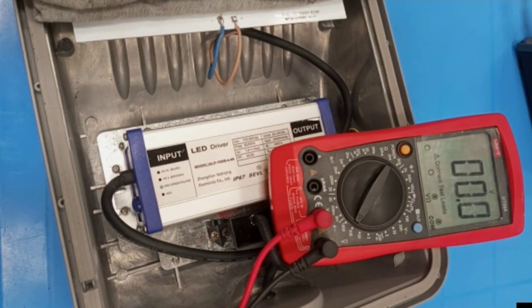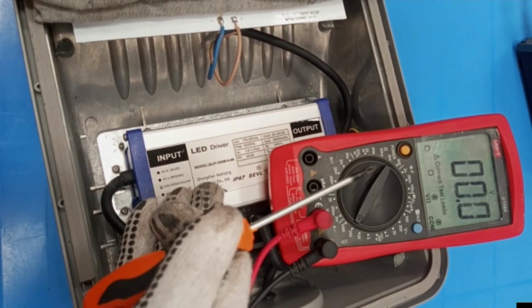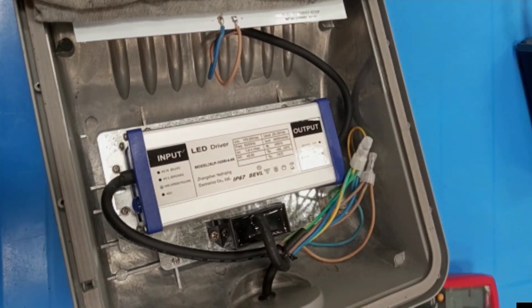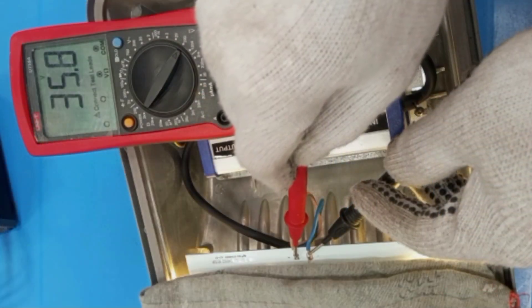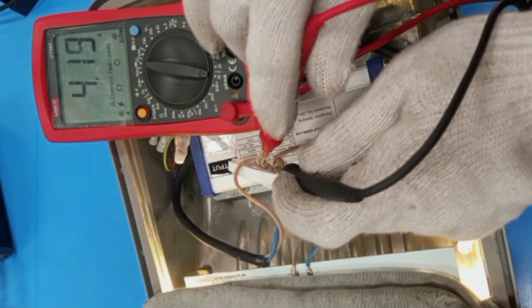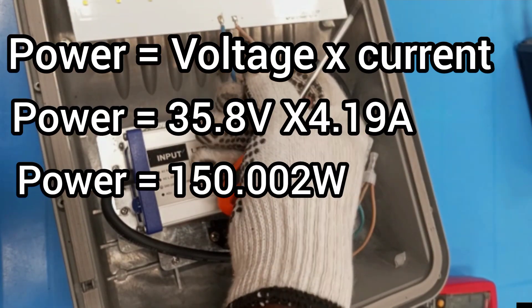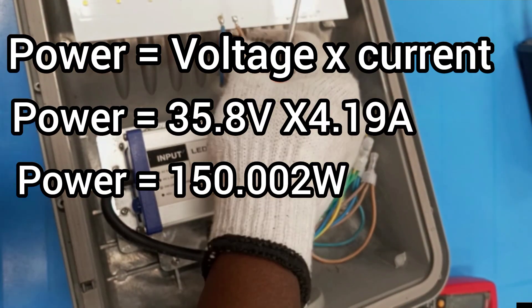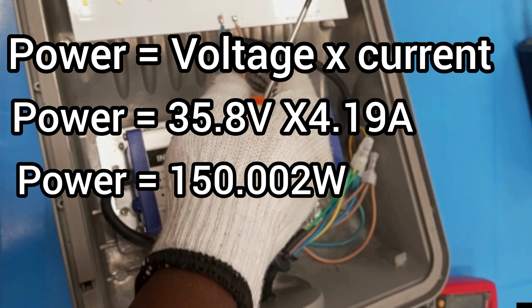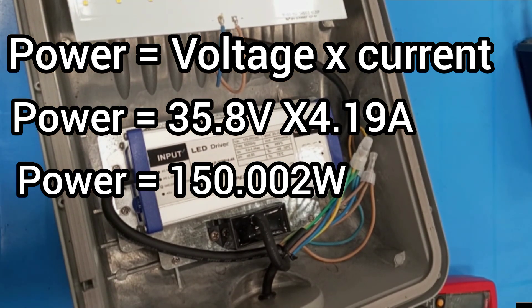Now that we are able to get our voltage and our current, we can now calculate the power of the lamp. We got a voltage of 35.8 volts and the current is 4.19 amps. Simply multiply 35.8 volts by 4.19 amps, and that gives us a total of 150.002 watts.